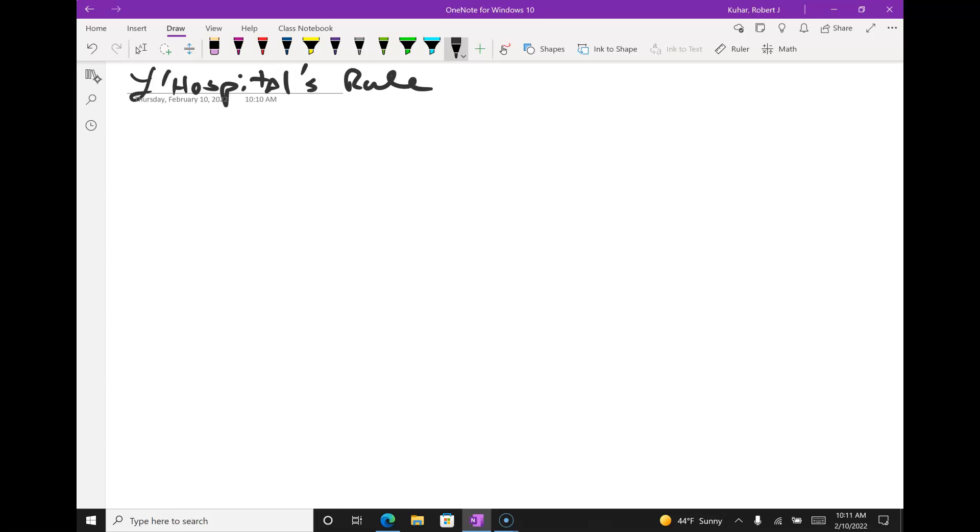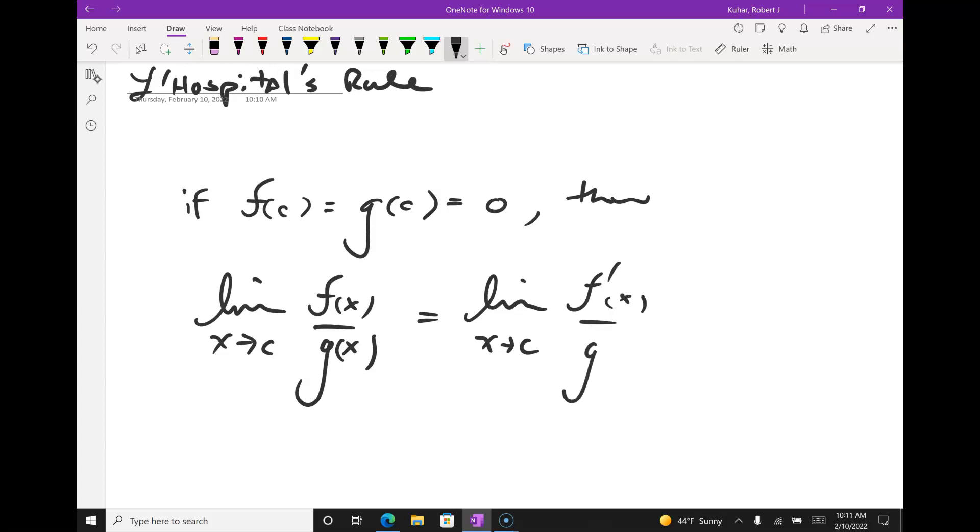So L'Hopital's rule says if f of c equals g of c equals zero, then the limit as x goes to c of f of x over g of x equals the limit as x goes to c of f prime of x over g prime of x.